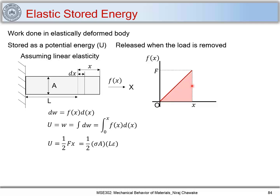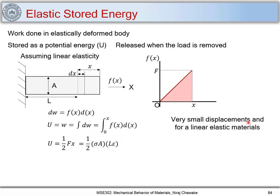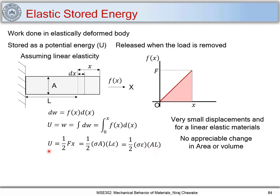Substituting F = σ·A (stress times area) and x = L·ε (length times strain) — noting this is valid only for very small displacements and linear elastic materials — and assuming no appreciable change in area or volume when strain is ε, we can write the energy as σ·ε·A·L. The term A·L is simply the volume.